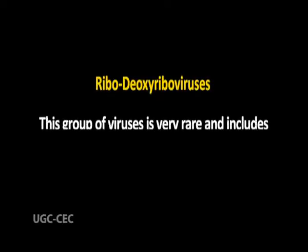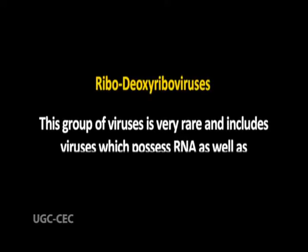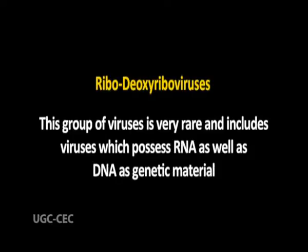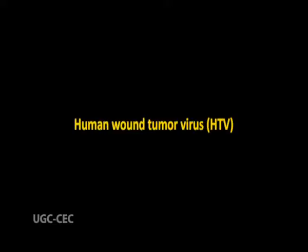The third group of viruses have RNA as well as DNA as genetic material. This group of viruses is very rare and includes those viruses which possess both RNA and DNA as genetic material. Two such viruses have been identified: one is human wound tumour virus (HTV), and the other is a virus which attacks plant cells.